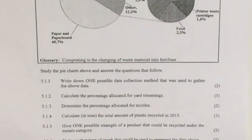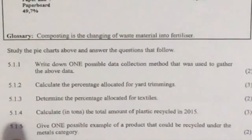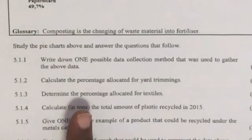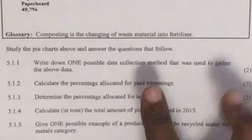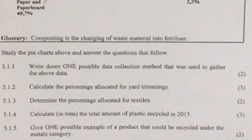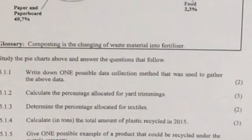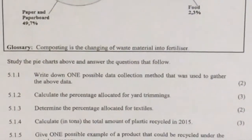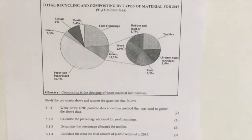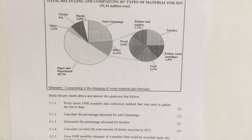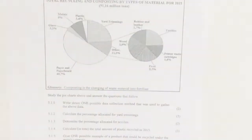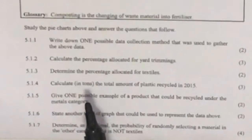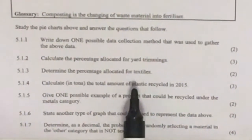Let's look at the first question: study the pie chart above and answer the questions that follow. Question 5.1.1 asks: write down one possible data collection method used to gather the above data. This is not a mathematical question — you just need to know how data is collected. They would have done a survey asking people how much waste they produce, or a questionnaire. You can write either of those.